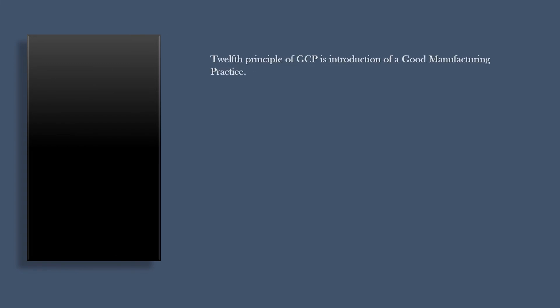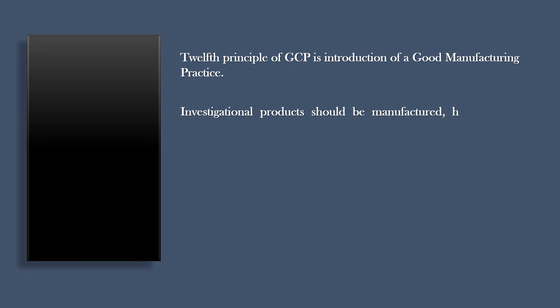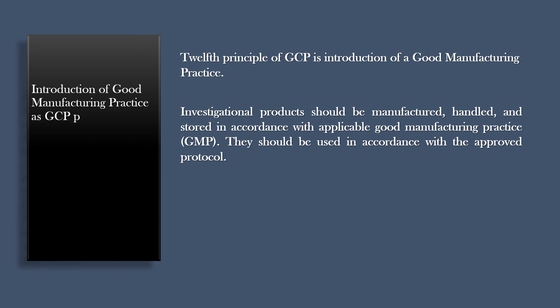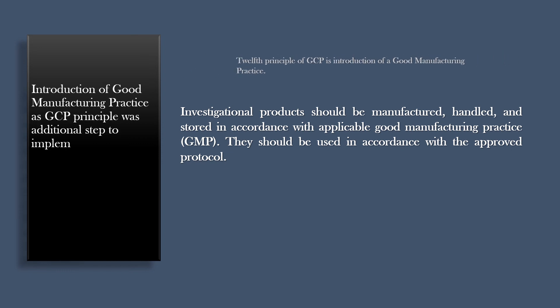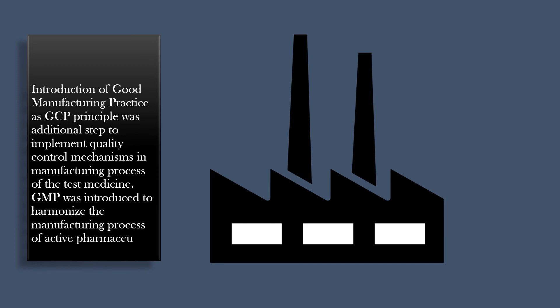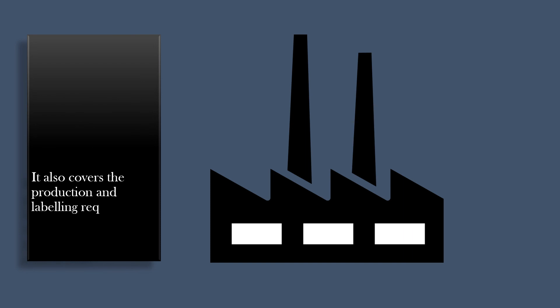The twelfth principle of GCP is the introduction of Good Manufacturing Practice. Investigational products should be manufactured, handled, and stored in accordance with applicable Good Manufacturing Practice, GMP, and should be used in accordance with the approved protocol. Introduction of GMP as a GCP principle was an additional step to implement quality control mechanisms in the manufacturing process of the test medicine. GMP was introduced to harmonize the manufacturing process of active pharmaceutical ingredients and also covers the production and labeling requirements of investigational products for use in clinical trials.